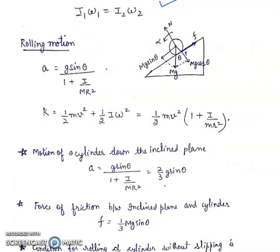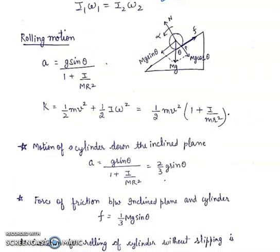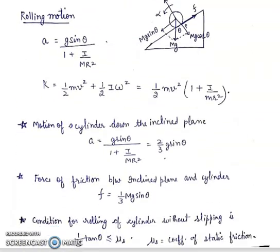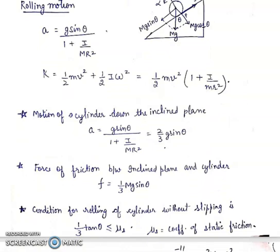Next is rolling motion. In rolling motion, the acceleration formula is g·sin(theta) upon (1 plus I by MR²), as you can see here.